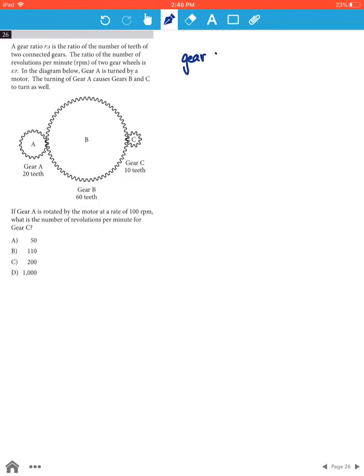Now the gear ratio R to S is the ratio of the number of teeth to the connected gears. So the gear ratio for A to B will be 20 to 60, which is 1 to 3.